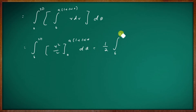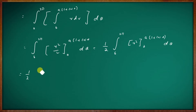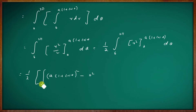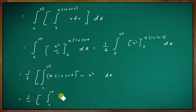Applying the limits, the upper limit gives a(1 + cosθ) all squared, and the lower limit gives 0 squared. So we have (a²/2) times the integral from 0 to 2π of (1 + cosθ)² dθ. Expanding: (1 + cosθ)² = 1 + 2cosθ + cos²θ.